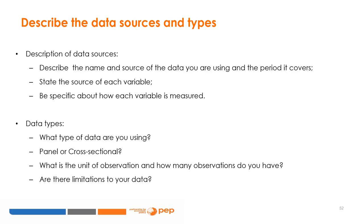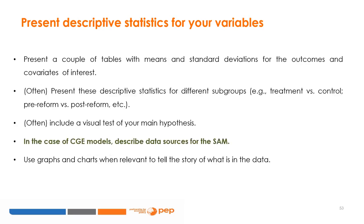In particular, you may want to highlight the important limitations such as those that you might address in a falsification or robustness check later. To do that properly, it is helpful to think about the ideal data set for the hypothesis you want to test and compare your data to that perfect data. It is important to explain how the data relates to your hypothesis and note any problems they pose. Readers appreciate honesty and are more likely to trust your results if you give them all the information they need to assess them correctly.